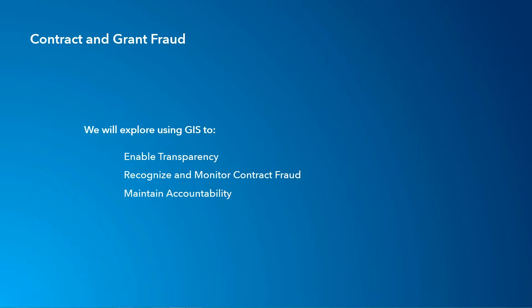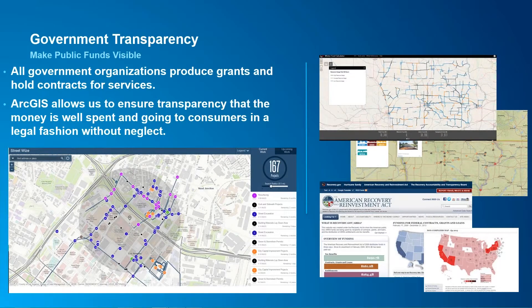The first topic I want to hit on is enabling government transparency — making public funds available. We have worked with organizations in the past, both in the federal and the state and local forms of government, on ways to enable transparency. We have worked with the American Recovery and Reinvestment Act, as well as multiple state and local agencies. Today, we're also going to be talking about Iowa Department of Transportation and LA City.